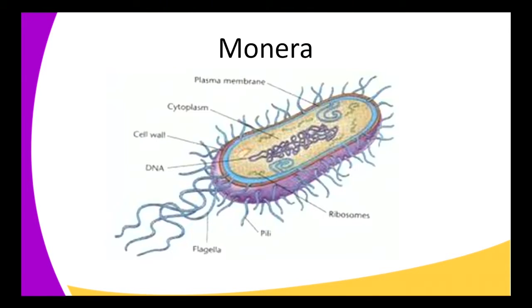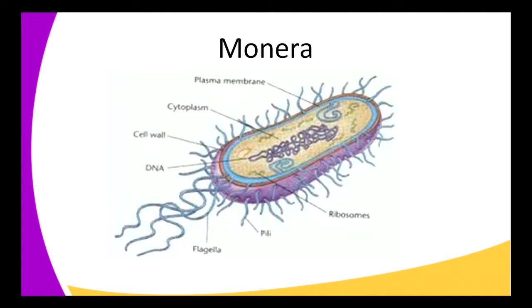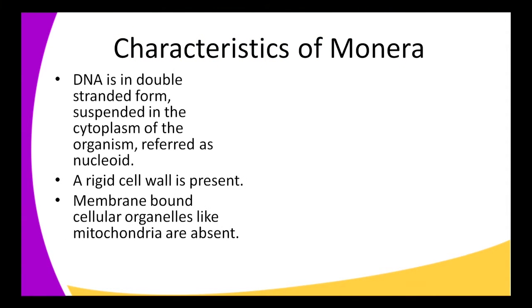Looking at the structure of a bacterium — the main example in the Monera kingdom — we have the flagella, which are used for movement; the pili; the ribosomes; and the DNA material. As you can see, there is no membrane bound around the DNA. We also have the cell wall, the cytoplasm, and the plasma membrane.